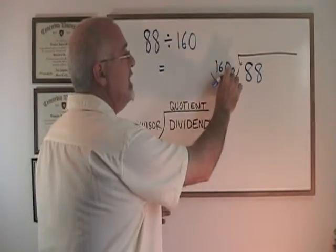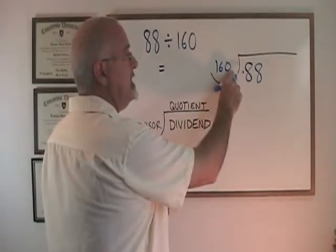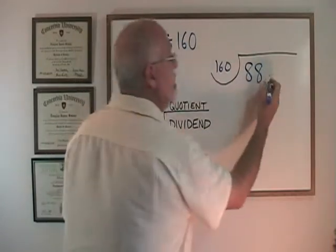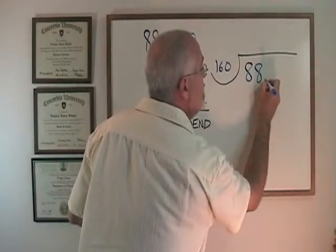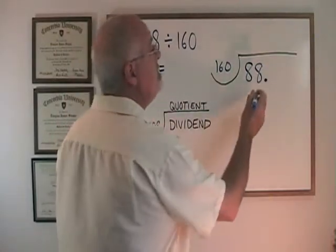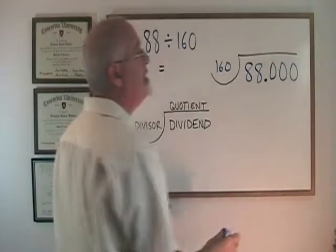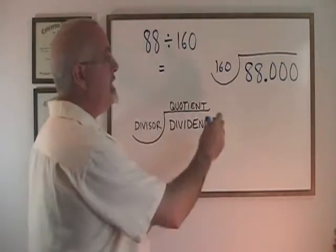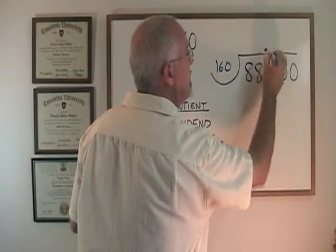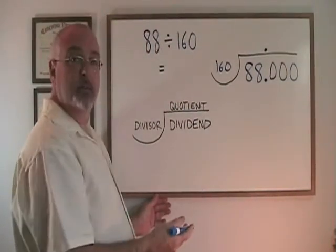We want the decimal on the right side of the number. Because the decimal is in the right place here, we don't have to move the decimal inside in the dividend. So we can write it, and then after it we write some zeros — as many zeros as we want. The decimal in the quotient will go right above the decimal in the dividend.